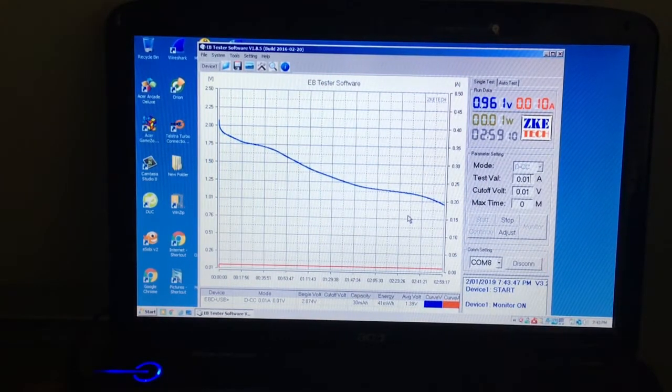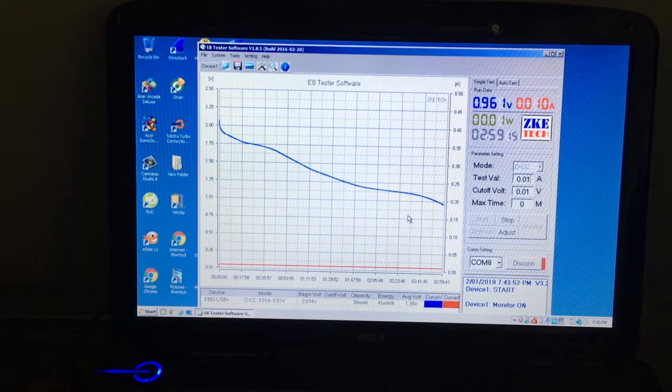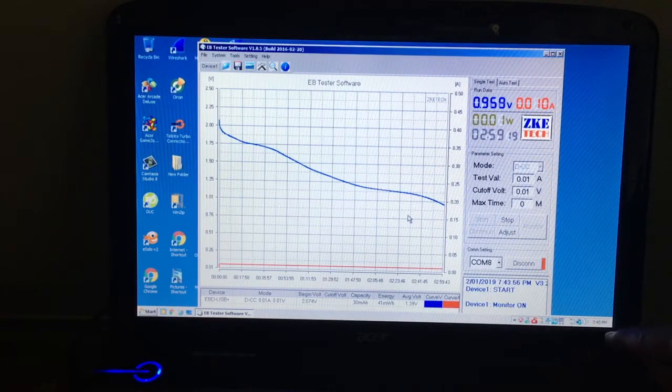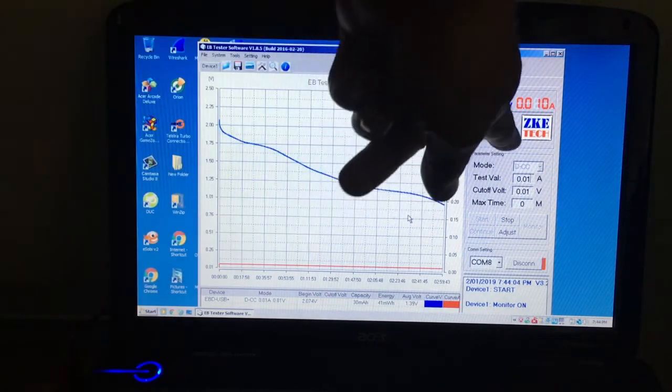We're back again. We're nearly at three hours for this cell. 30 milliamp hours, 41 milliwatt hours. And it's 0.9 volts. I have to unfortunately go out. So I'm canning the experiment. I'll charge it up tomorrow for 45 minutes again and see if we actually get our three hours.